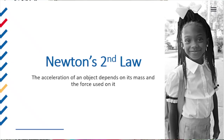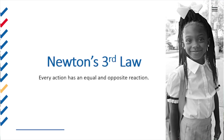Now let's review the other laws of motion. Isaac Newton's second law of motion says that the acceleration, or the speeding up, of an object depends on the amount of matter inside of it — its mass — and the amount of force used to move it. Newton's third law says that for every action, there is an equal and opposite reaction. We discussed Newton's third law in our previous lesson, and the second law a little bit before that.